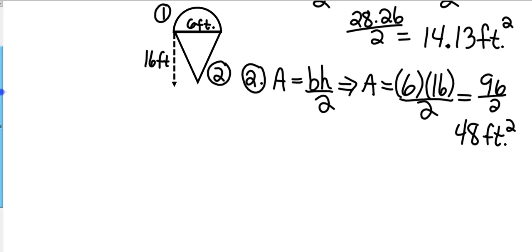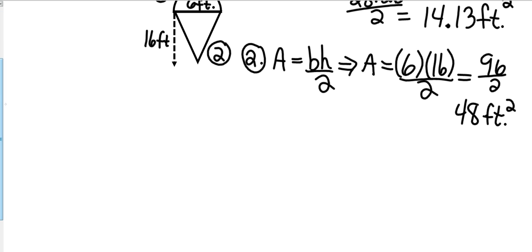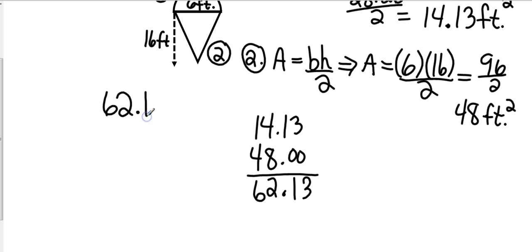So now I need a total. I have 14.13 square feet and I have 48 square feet. That gives me 62.13 square feet. I'm going to round this to the nearest tenth, so that's going to give me 62.1 square feet. Okay, so that's my composite figure.